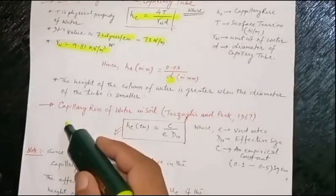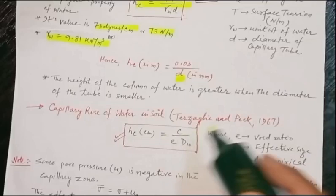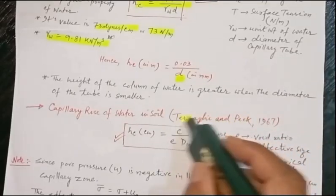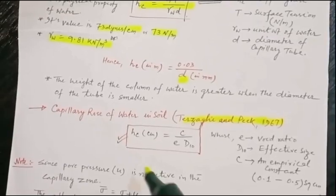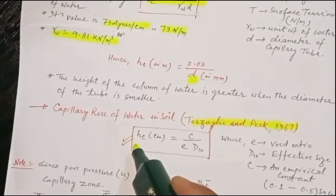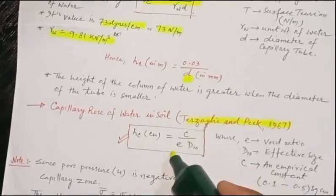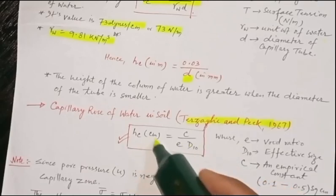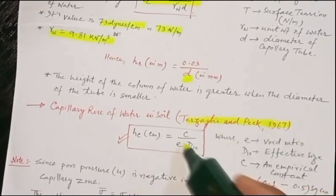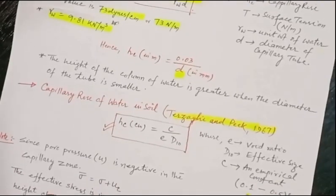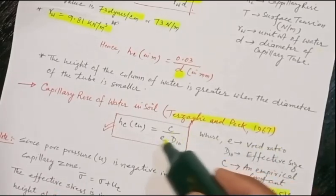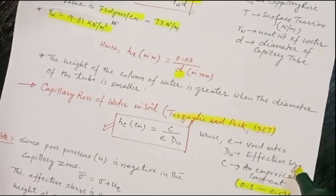For capillary rise of water in soil, Terzaghi and Peck proposed in 1967 the formula hc = C/(e × d10), where hc is in centimeters, C is an empirical constant varying from 0.1 to 0.5 square centimeters, e is void ratio, and d10 is effective size.